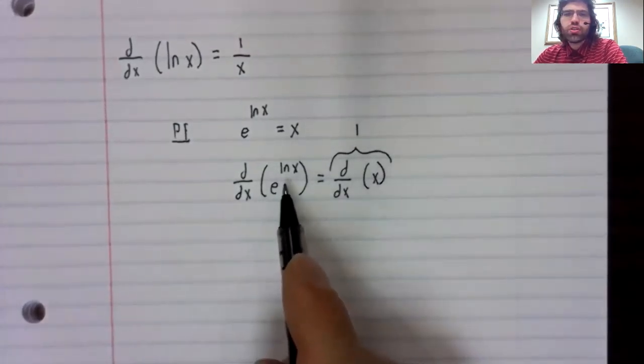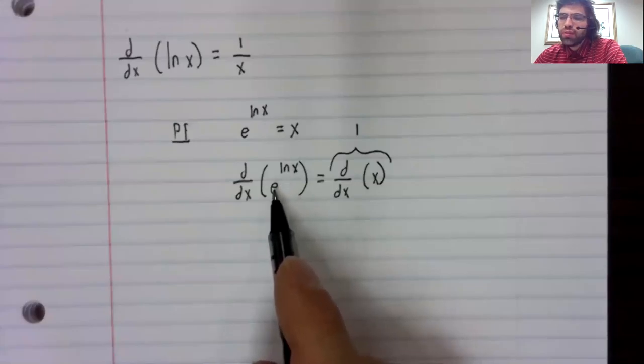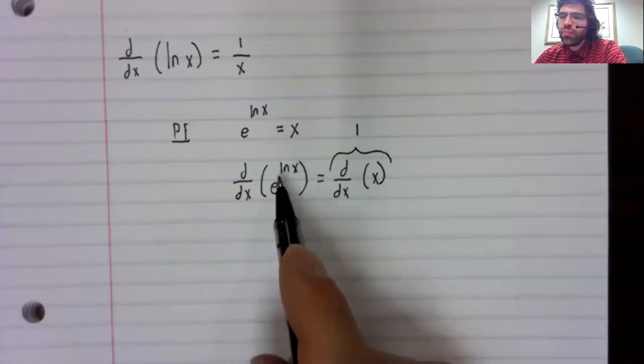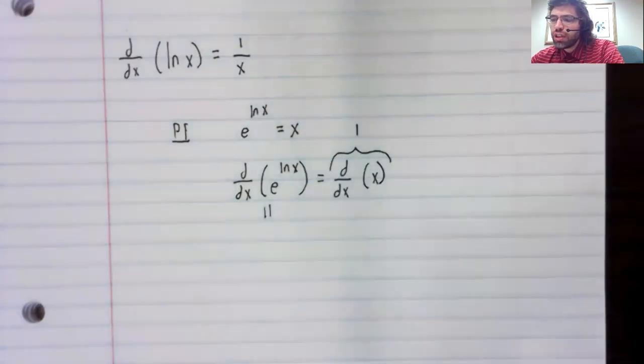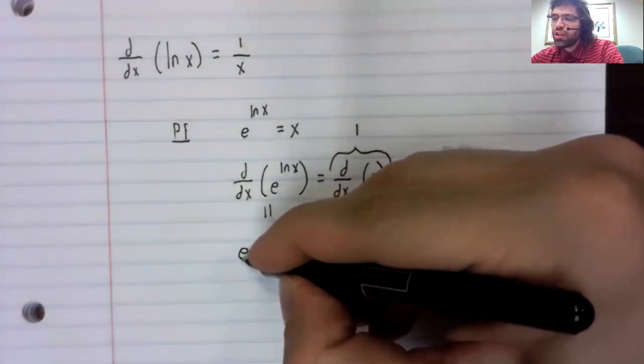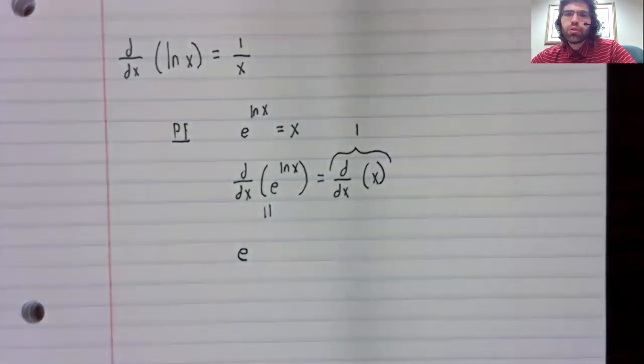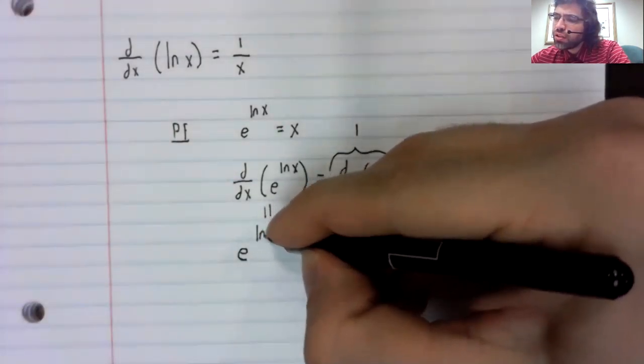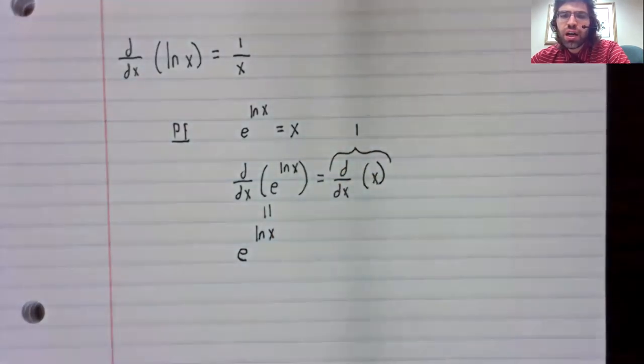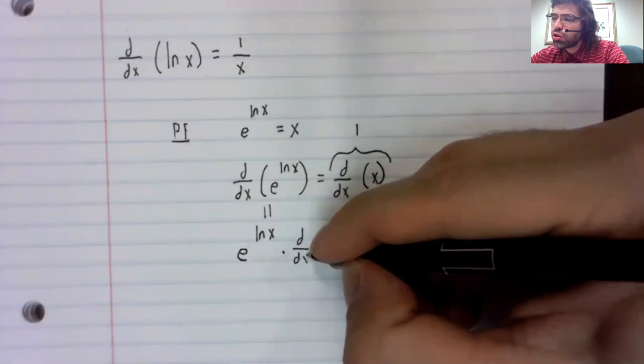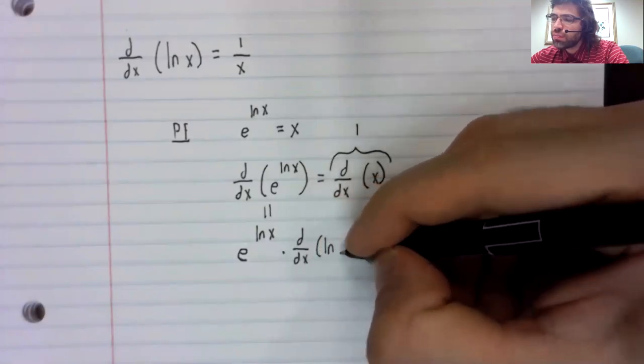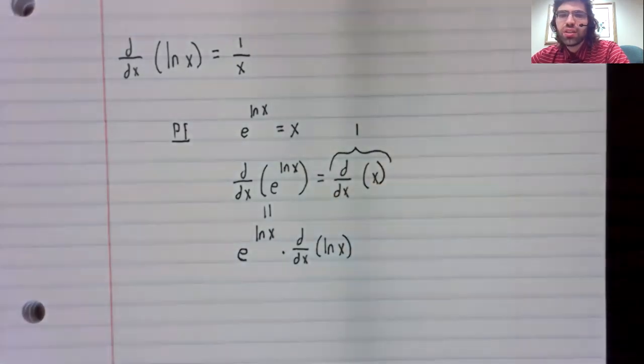Now, here's a chain rule problem. We've got e to a power. The exponential is our outside function. This is our inside function. So to take this derivative, it's the derivative of the outside function. Well, the derivative of e to the x is e to the x, with the inside function stuck inside of it, times the derivative of the inside function.